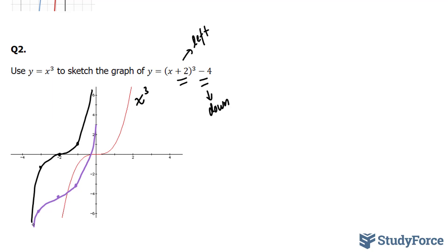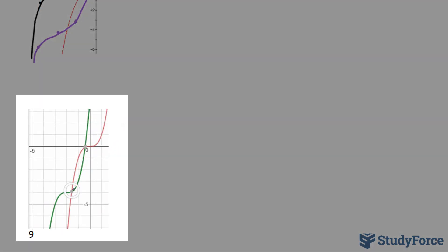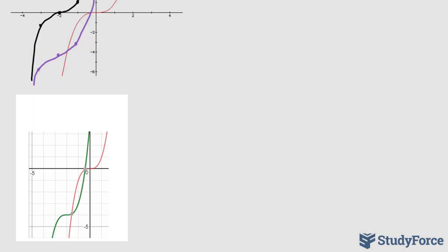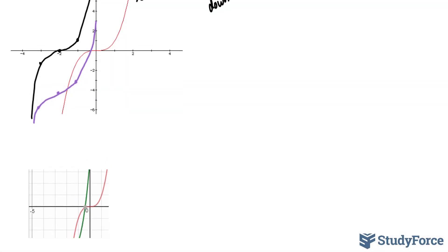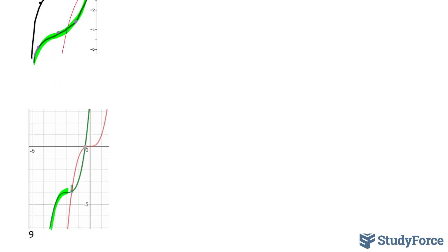Now if we were to plot this function using a graphing calculator, it would look like this. Notice that this green line right here represents the new function, and this red curve right here represents x to the power of 3. And notice the similarities between what you did and the graphing software.